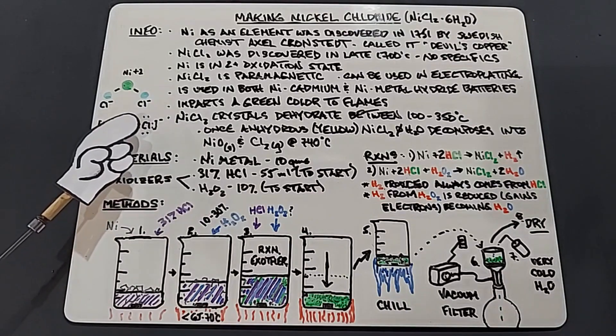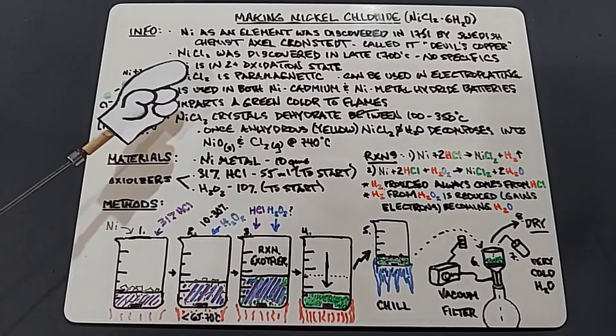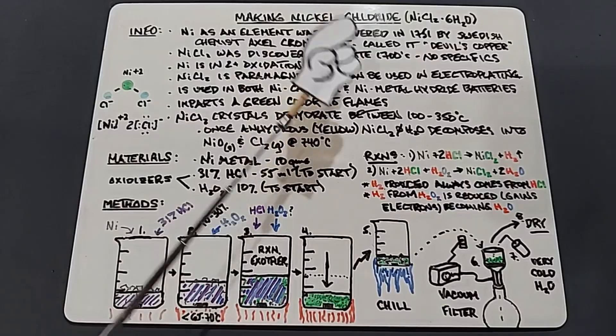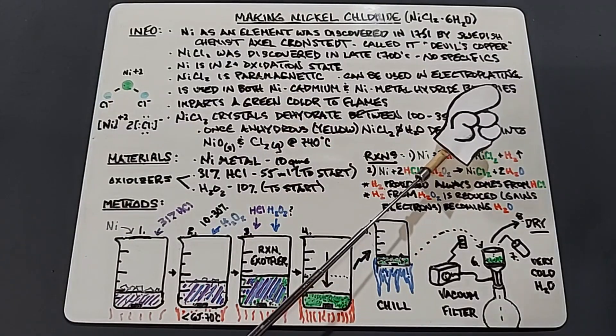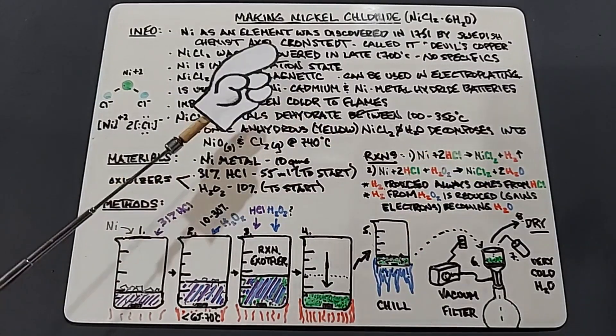When it comes to energy, nickel chloride is used in both nickel cadmium and nickel metal hydride batteries. NiCl₂ imparts a green color to flames when it comes to pyro.